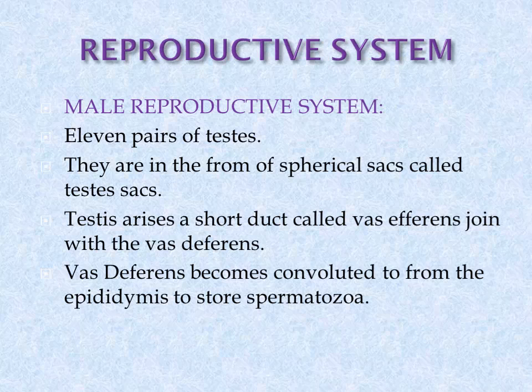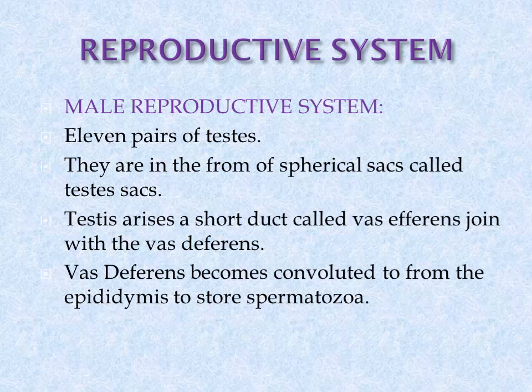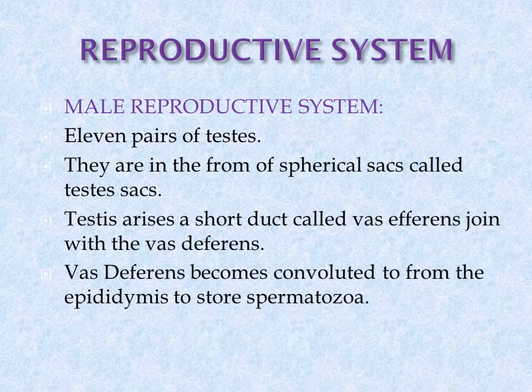Now the reproductive system. Both male and female reproductive organs are present in the same leech — this is a special characteristic of annelids. Both sexes are present in the same leech. The testes are 11 pairs. They form a spherical sac called the testis sac.